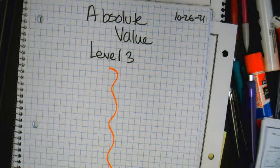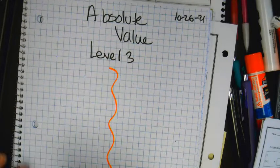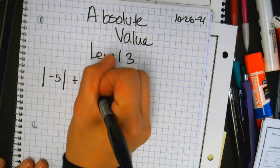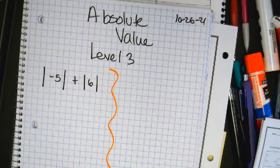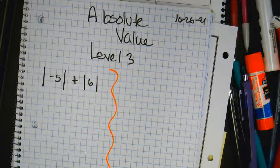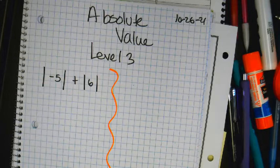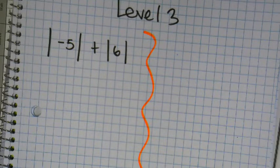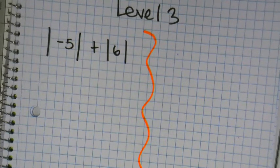Alright, here we go. Absolute value of negative 5 plus the absolute value of 6. Now, this is what we did yesterday. Yesterday I taught you that when you have problems like this, what you're going to do is you're going to drop down each individual number.